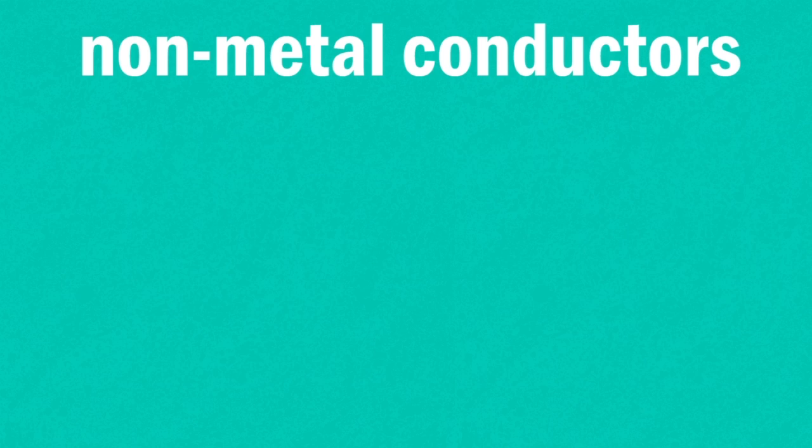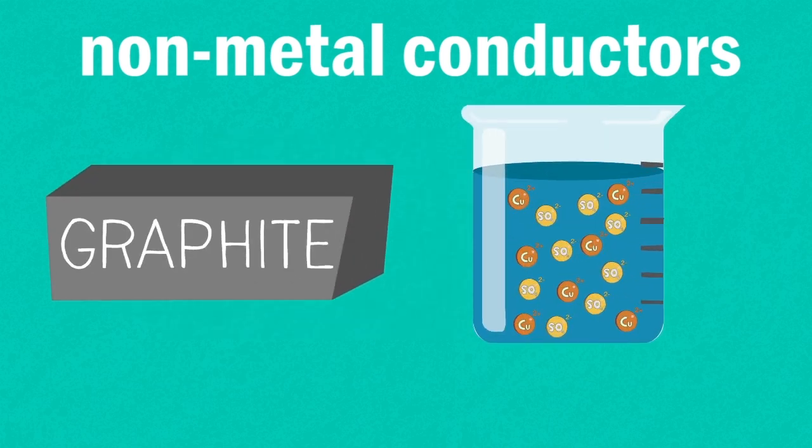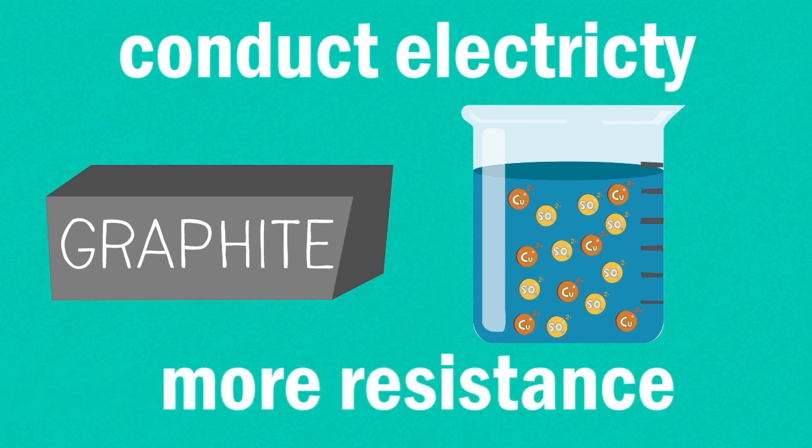Some non-metal conductors like graphite, a form of pure carbon, or solutions of salts forming electrically charged ions will conduct electricity, but these have more resistance.